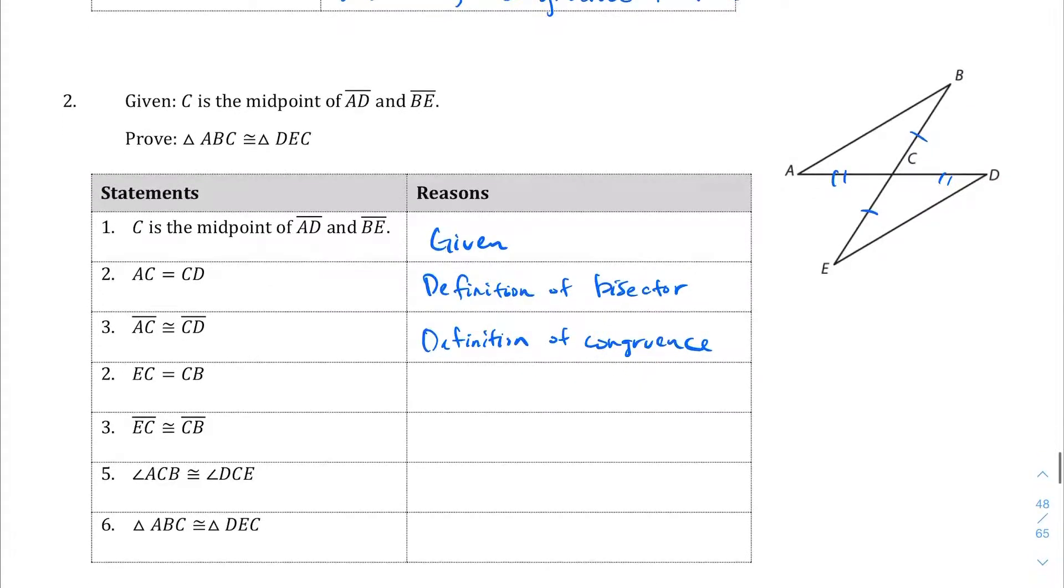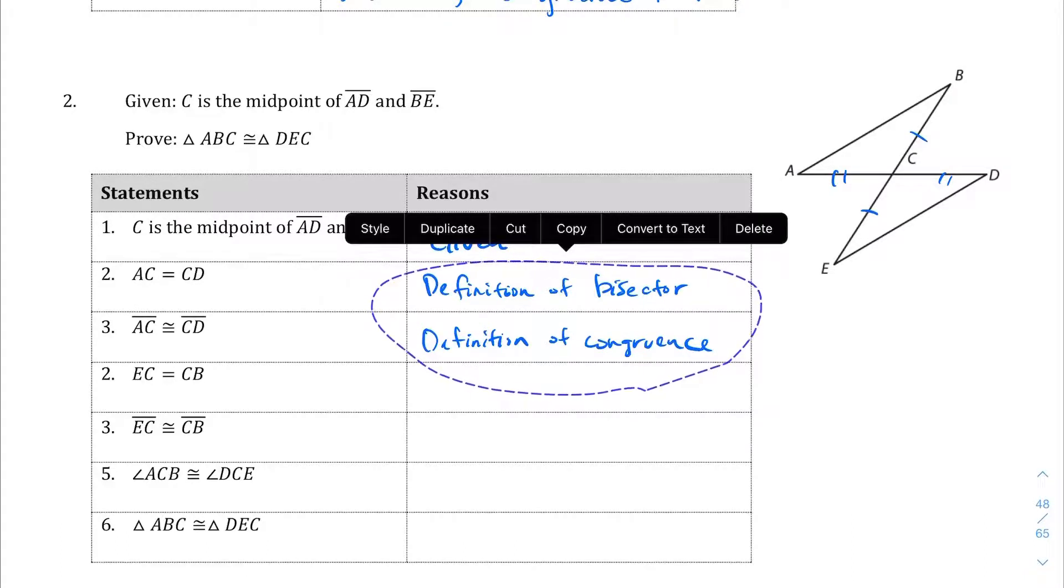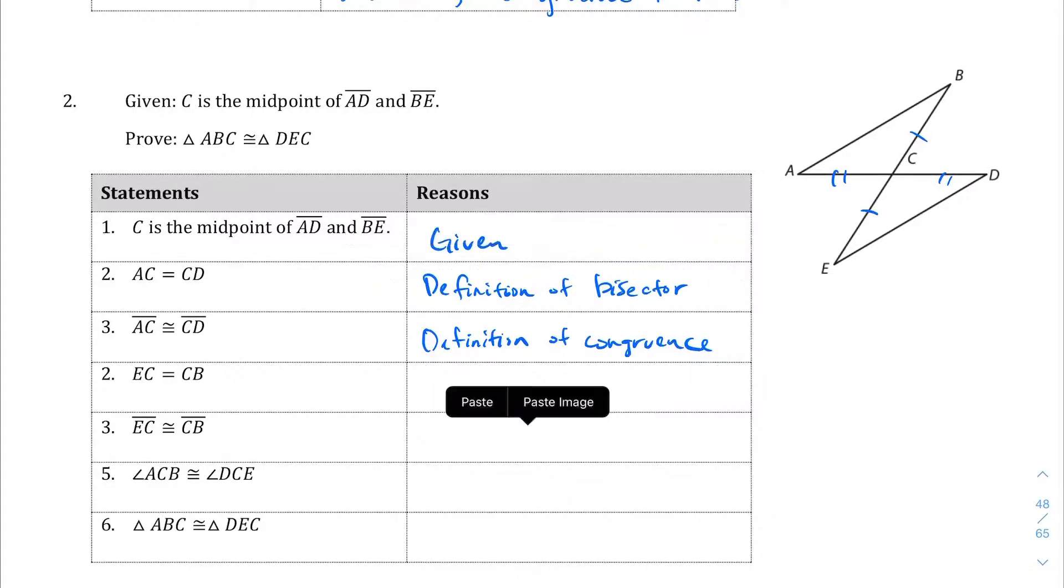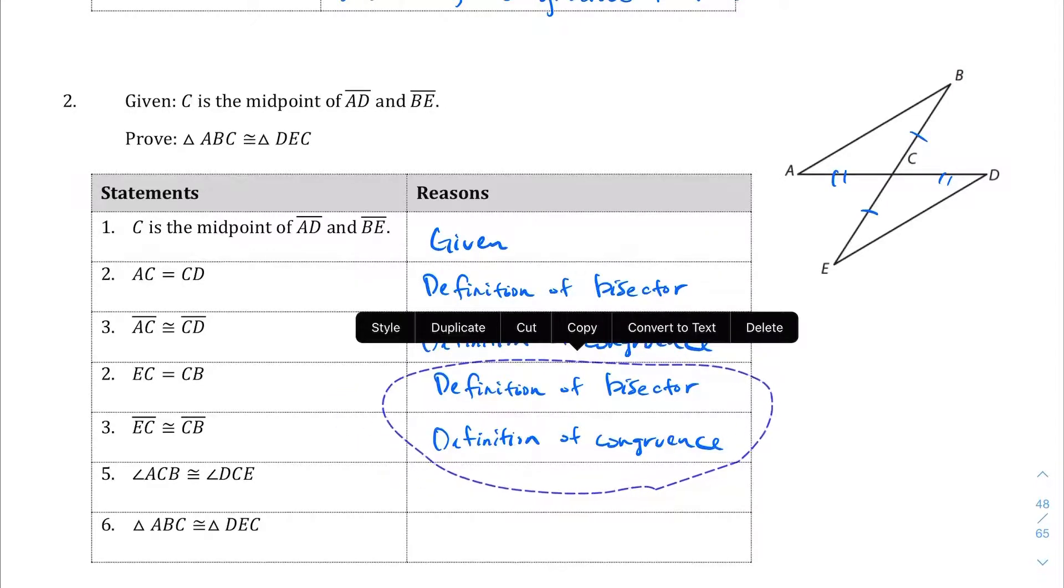Which I think is a little silly because we've already proved that they basically are the same. Side EC being equal to side CB is just the same thing. Definition. In fact, I'm going to save us some time and I'm just going to copy and paste these two things because the next two statements are going to be the same.